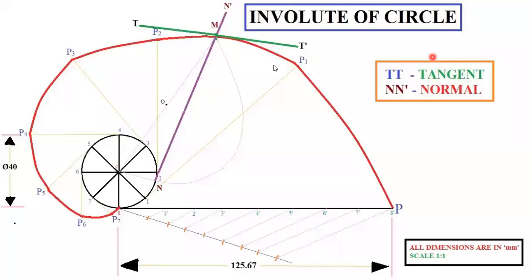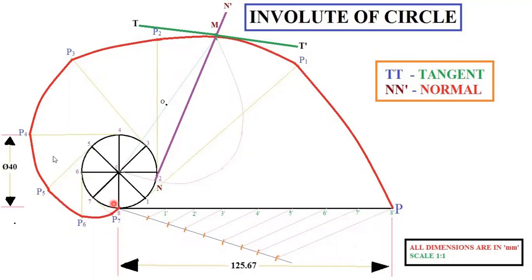In this video we are going to see how to draw an involute of a circle. The involute of a circle is the path traced out by a point on a straight line that rolls around the circle.